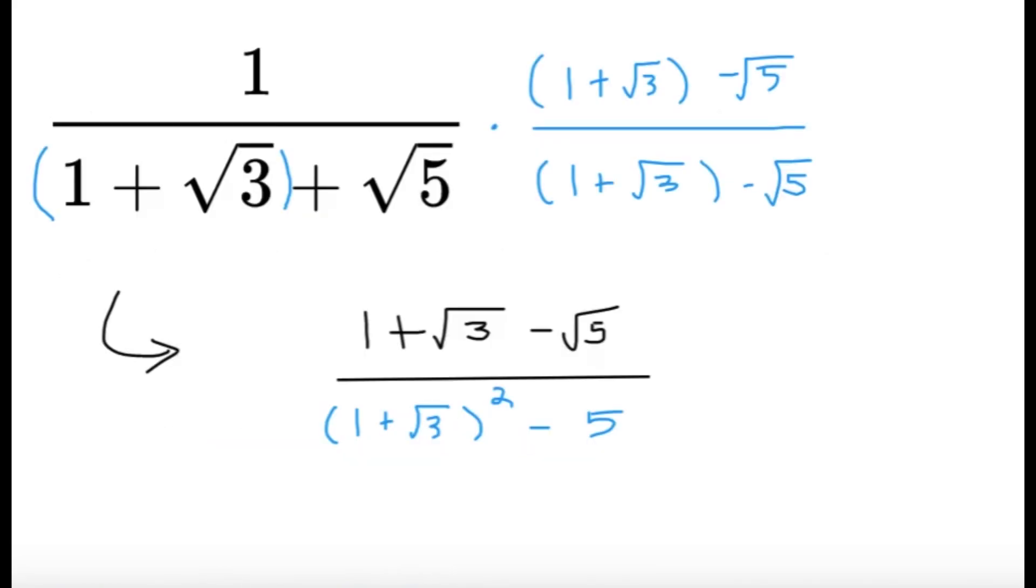So let's try to rationalize the right-hand side of the given equation. Now I'm going to group the 1 and the square root of 3 together so that it's going to be like one term, and then I'm going to rationalize part of the denominator. So essentially, I'm just doing 1 plus square root of 3 plus 5. So let's take the conjugate of that. It's going to be 1 plus square root of 3 minus square root of 5. So let's multiply that to the numerator and denominator.